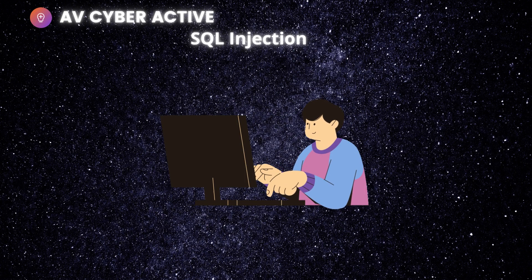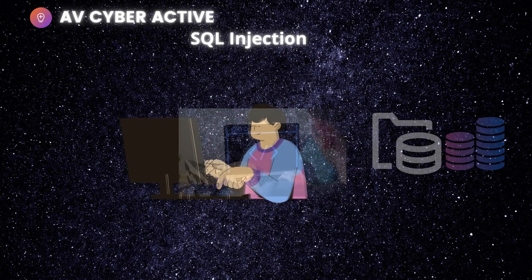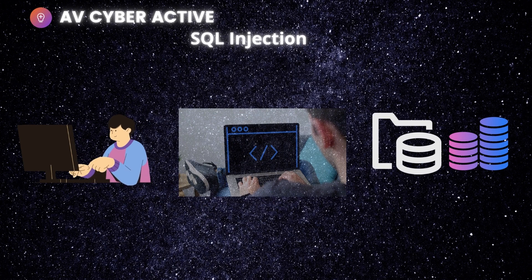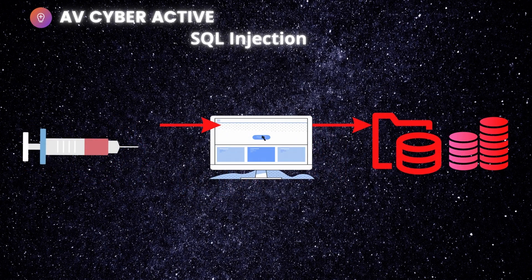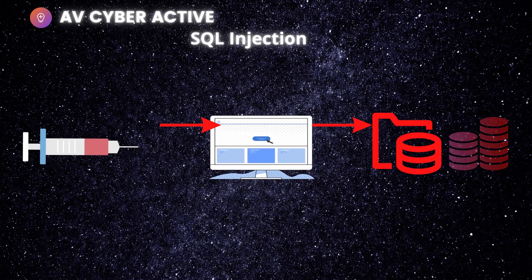SQL injection usually occurs when you ask a user for input, like a username or user ID, and instead of a name or an ID, the user gives a SQL statement that you will unknowingly run on your database.